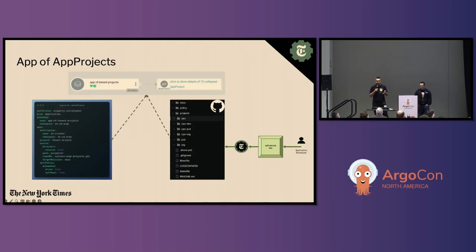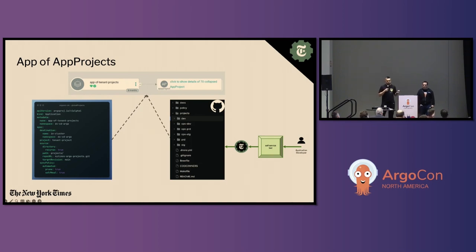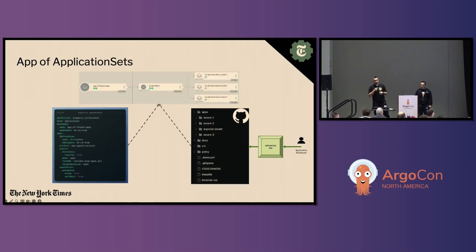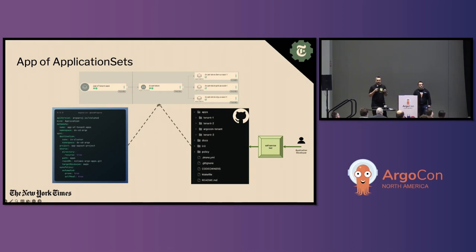App of app projects is an Argo CD application that looks to a special GitHub repository where we have a folder structure for each environment. An application developer runs the self-service tool, which generates the app project definition and creates a pull request. At that point, YAML linting and OPA policy checks are kicked in, and after approval from an engineer on our team, everything is merged back to main and Argo CD creates a new project in a matter of seconds. The concept of app of application sets is similar — we have a separate repository for that with slightly more relaxed security rules, leveraging GitHub's code owners feature to grant tenants permission to self-review changes to their application sets.